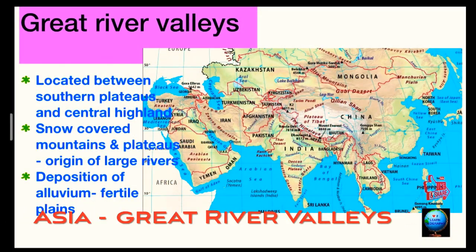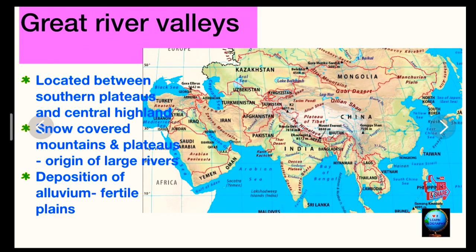Hello everyone, welcome to my channel. Today's topic is great river valleys of Asia. Many large rivers rise in the snow-covered mountains and the plateaus of the central highlands of Asia. These rivers have brought down huge deposits of alluvium, giving rise to extensive fertile plains. The great river valleys are located between the central highlands and the southern plateaus.